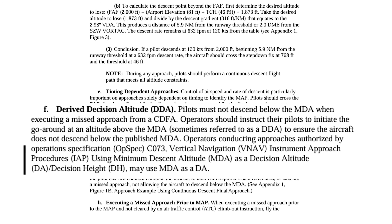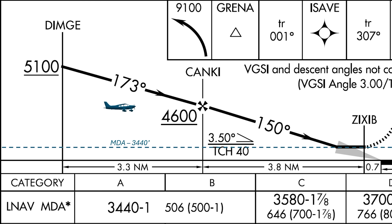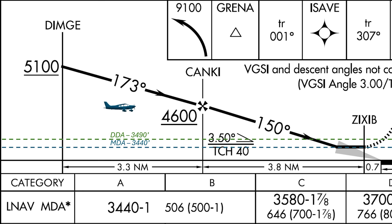The FAA makes no such requirement for regular Part 91 GA flying. Still, we could take a page from the pros' book and make our approaches more stable. A derived decision altitude adds a buffer onto the MDA — between 30 and 50 feet should be sufficient. So let's make our derived decision altitude 3,490 here.